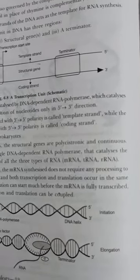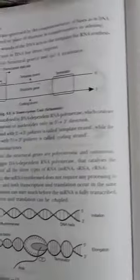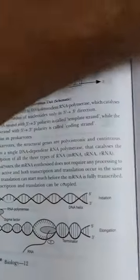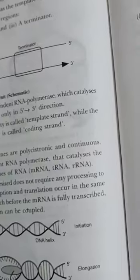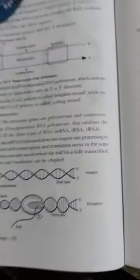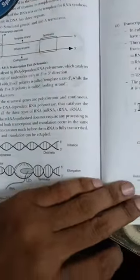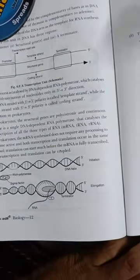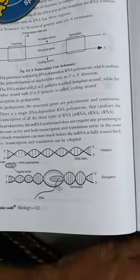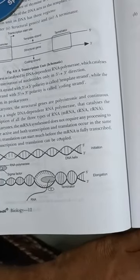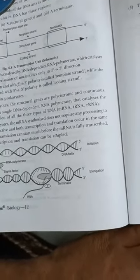Transcription in prokaryotes. In prokaryotes, the structural genes are polycistronic and continuous. There is a single DNA dependent RNA polymerase that catalyzes the transcription of all three types of RNA.